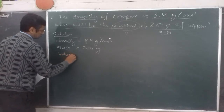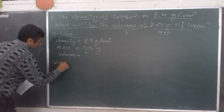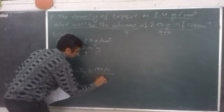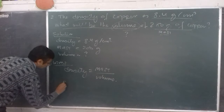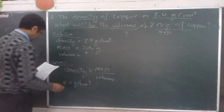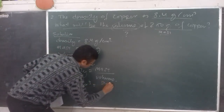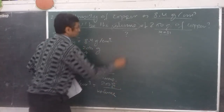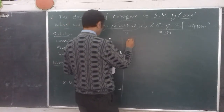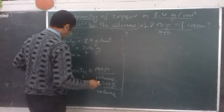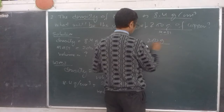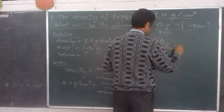In the solution: density is given as 8.4 grams per centimeter cube, mass is given as 200 grams, and we have to find the volume. Using the formula: density is equal to mass upon volume. We substitute the values: 8.4 gram per centimeter cube equals 200 gram divided by volume. We cross multiply to get volume equals 200 grams divided by 8.4 gram per centimeter cube.